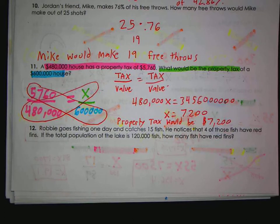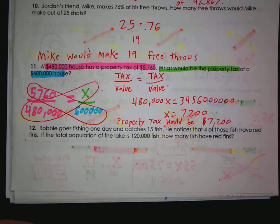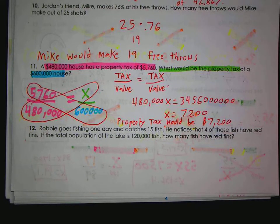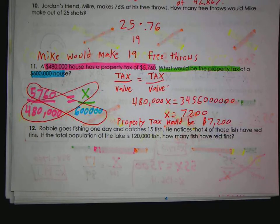Questions? Robby goes fishing one day and he catches 15 fish. Anyone ever go fishing before? You ever catch 15 fish? You ever catch one? Every time I go fishing I can't catch anything. And when I do, it's like these little bitty fish I have to throw back in. If you've never been fishing, try it out. It's actually kind of fun. The worst part, I would think, is when you have the hook in the fish and you have to unhook it and throw the fish back in. There are some people, they don't like putting the worm on the hook. Anyway, Robby goes fishing. He catches 15 fish. He notices that four of those fish have red fins. If the total population of the lake is 120,000 fish, how many approximately fish have red fins?